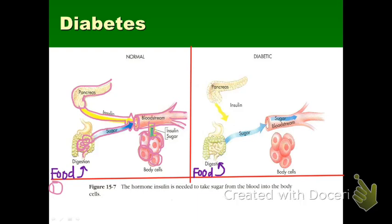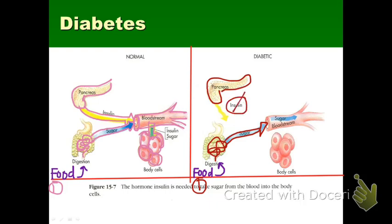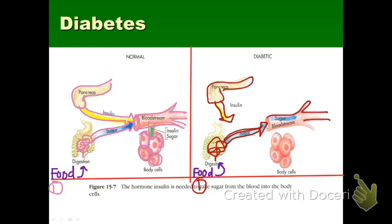On the opposite end of the spectrum is the diabetic patient, where something is malfunctioning — typically an issue with the pancreas. People with diabetes either do not make enough insulin, or the insulin doesn't do its job of bringing sugar from the bloodstream into the cells. The food travels to the small intestine and is broken down into simple sugars, but the pancreas isn't stimulated to release insulin — or not enough insulin is released to bring sugar into the body cells.